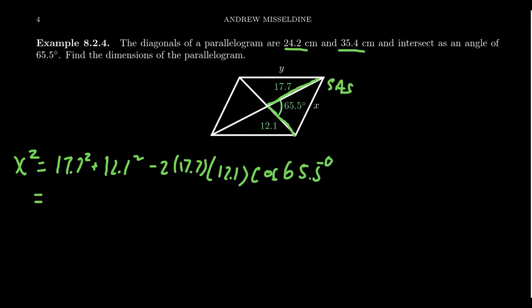There's some huge number crunching to do on the other side, but that's what calculators are for. 17.7 squared gives us 313.29. 12.1 squared gives us 146.41.